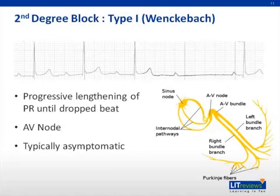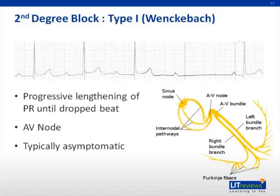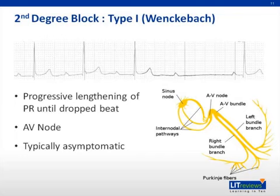Mobitz I is almost always a problem with the AV node. It can be seen with high vagal tone, ischemia, medications, or structural heart disease, and it is not always permanent. It is typically asymptomatic, but can result in symptoms during sinus bradycardia. The drop beat results in fewer ventricular contractions and a reduction in cardiac output, leading to dizziness and presyncope. Treatment consists of avoiding medications that affect the AV node and removing any offending agents. If symptomatic and no cause can be found, a pacemaker may be necessary.